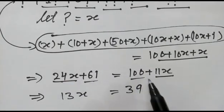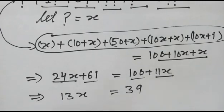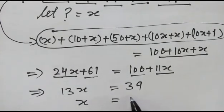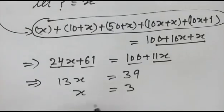So this gives us 13x equals 39, so x will be equal to 3. Therefore the symbol value will be 3.